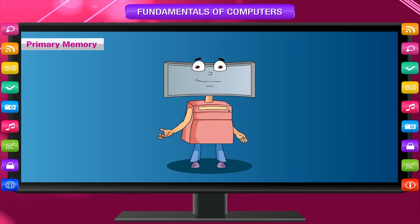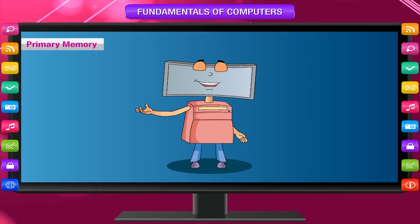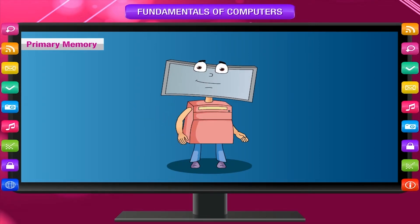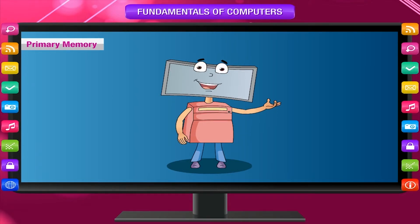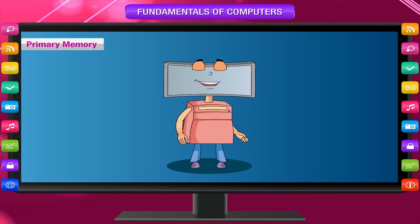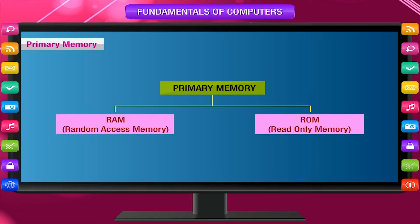The primary memory is the main memory of the computer that stores data and instructions for processing. It communicates directly with the CPU. There are two types of primary memory: RAM and ROM.